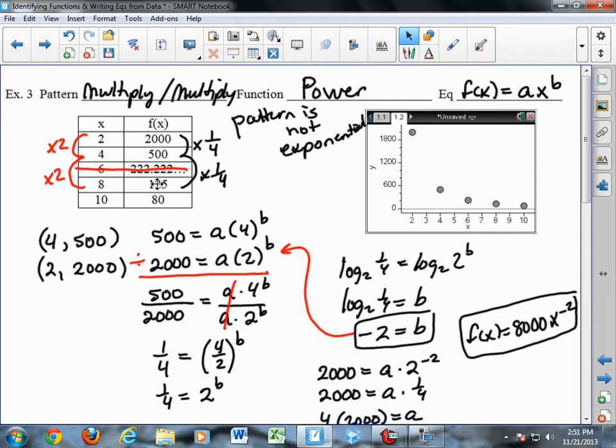It turns out we have a multiply-multiply pattern. If I multiply the x's, 2 times 2 is 4, 4 times 2 is 8. Notice I skipped over the 6. Notice here I skipped over the 222.2 repeating. So I just crossed that out to show, not that it's not a point on the graph, but that it's not included as part of my pattern.